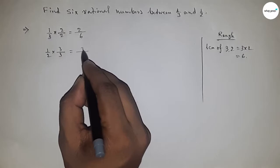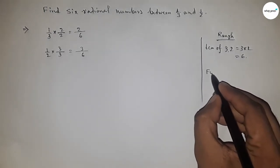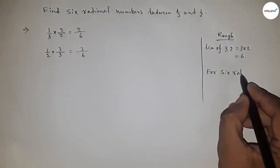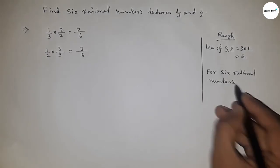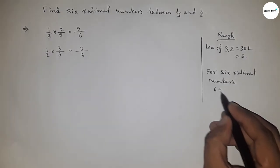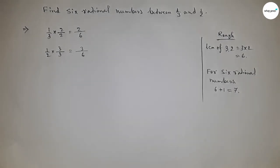Now for 6 rational numbers, what should we multiply with both rational numbers? If we multiply by 6 plus 1 equals 7 with both rational numbers, we have to multiply by 7 here, 7 by 7 and here 7 by 7.